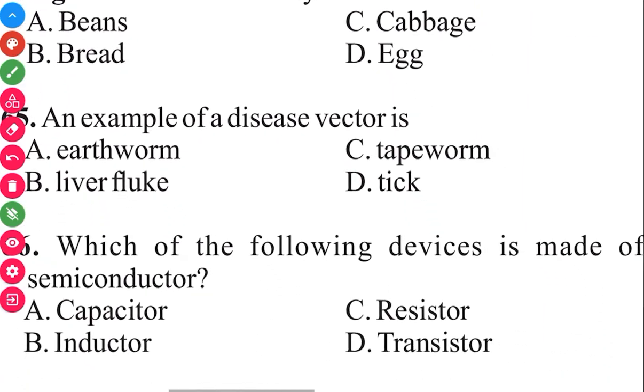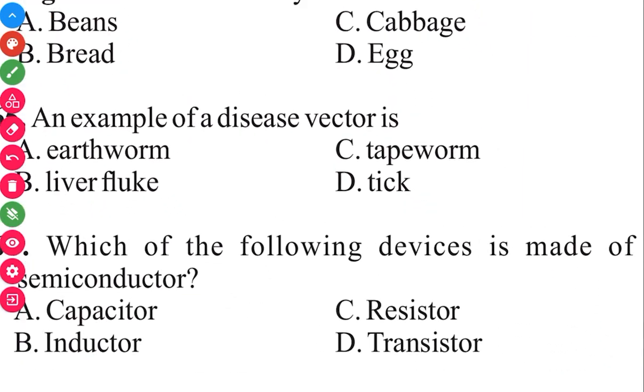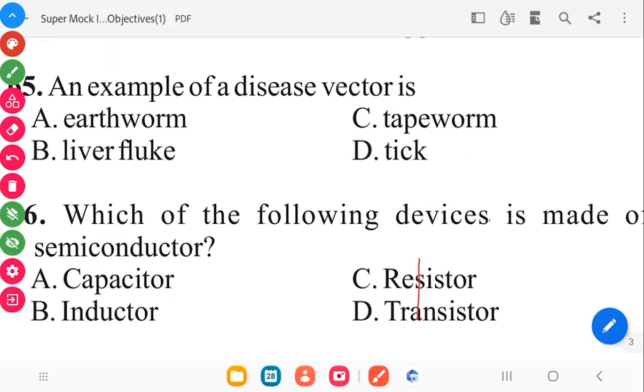Question 66. Each of the following devices is made of a semiconductor. The answer in 3, 2, 1 is D, transistor.